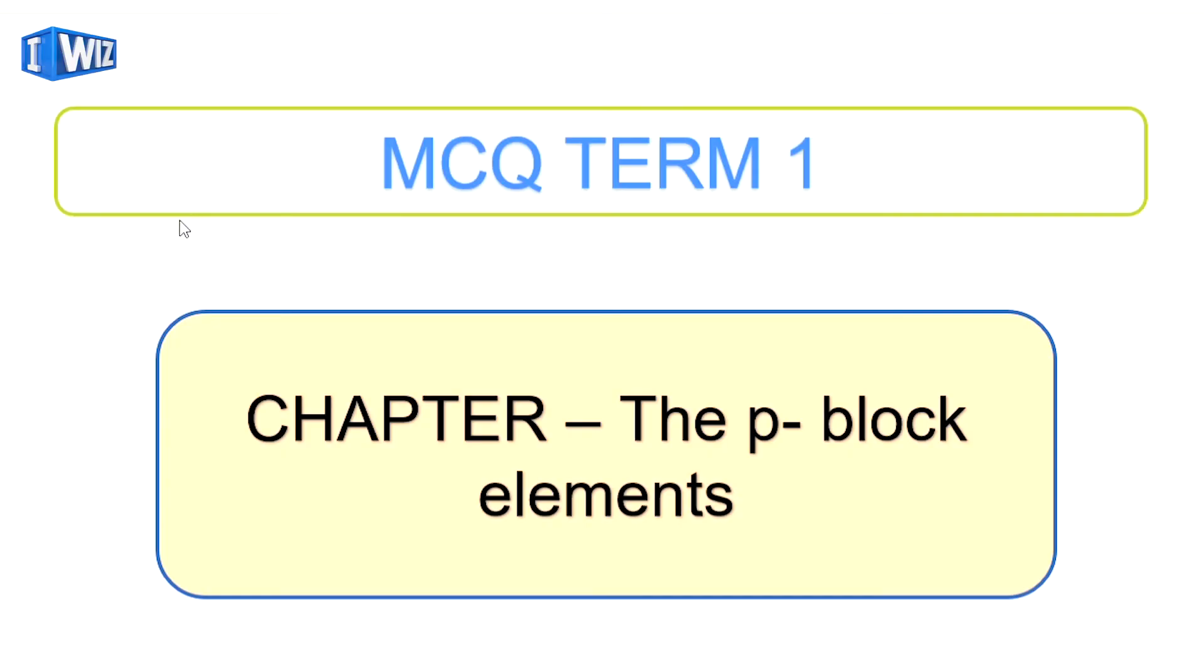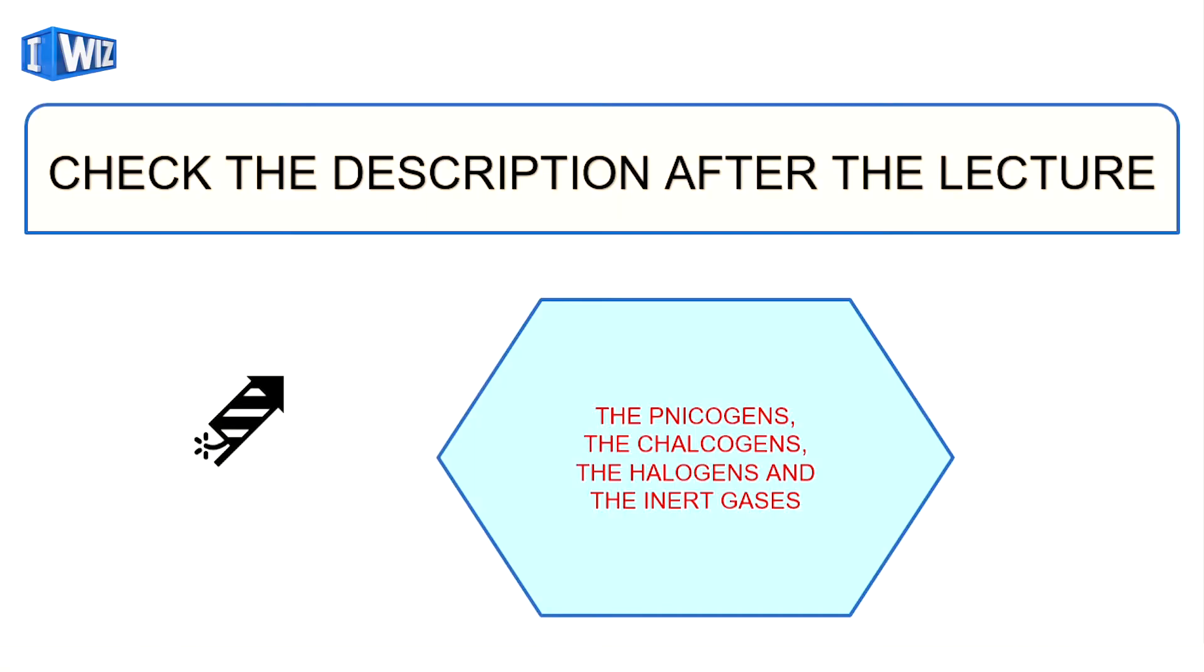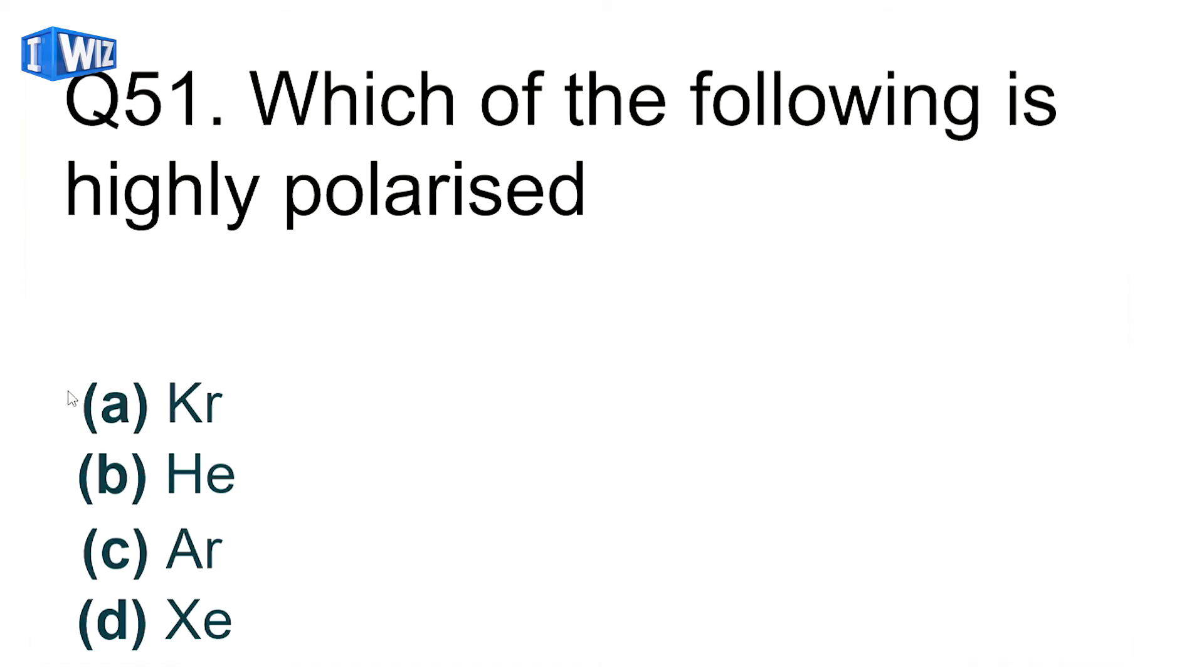Hello students, let's continue from where we left last time. In this part, the first question is which of the following is highly polarized. Since xenon is largest in size, it can easily get polarized, so D is the correct option.